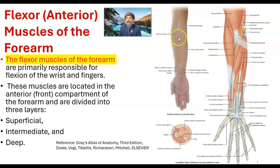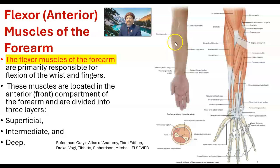This is the anterior surface or flexor surface of the forearm. In anatomical position, this is the flexor surface or anterior surface. These muscles are located in the anterior compartment of the forearm and they are divided into three layers: the superficial, intermediate, and deep layer.